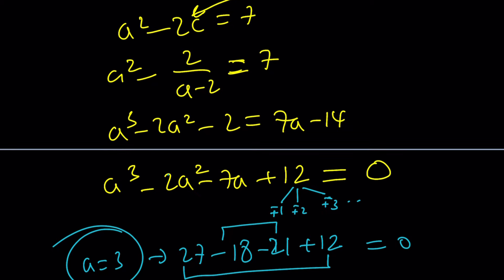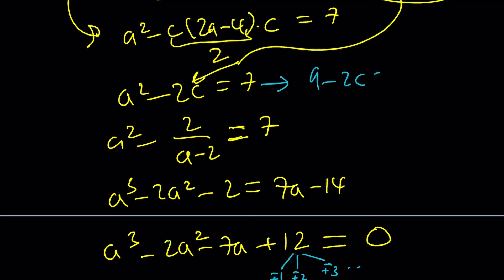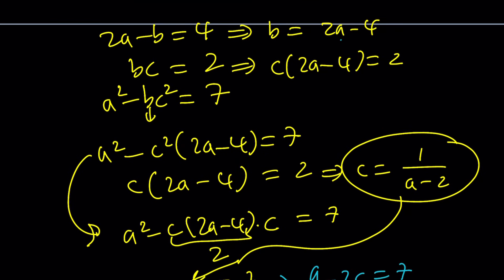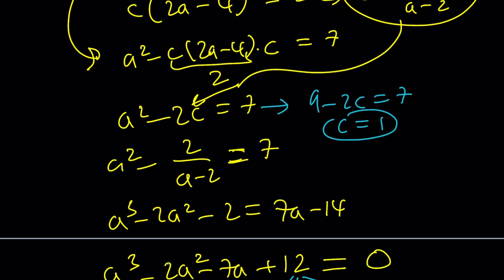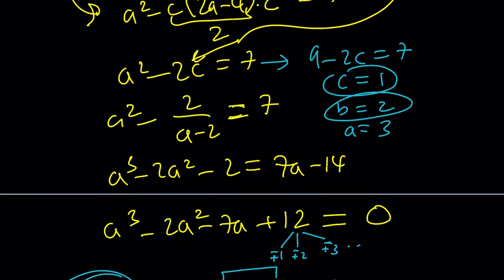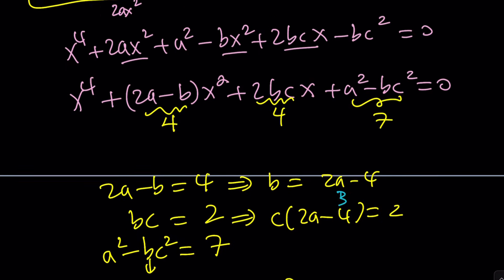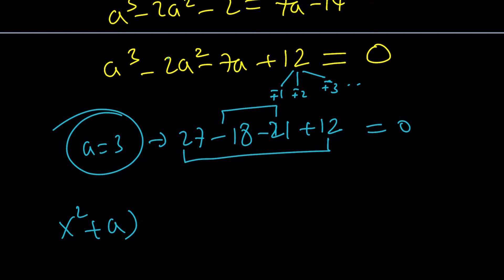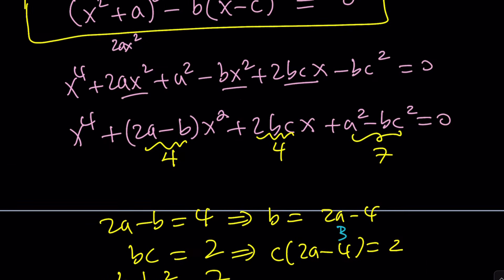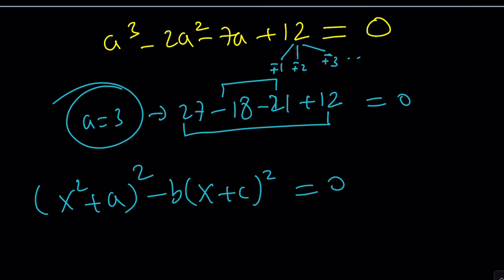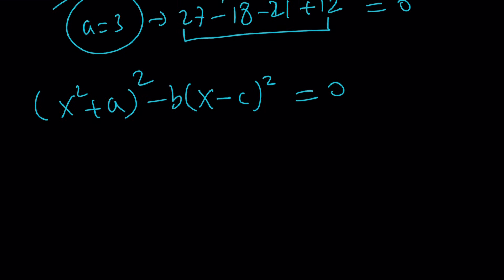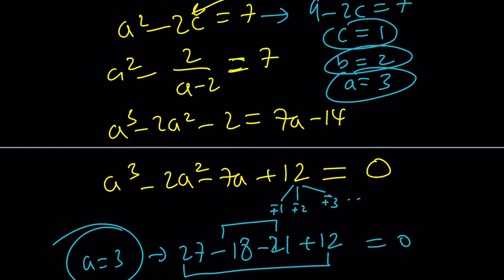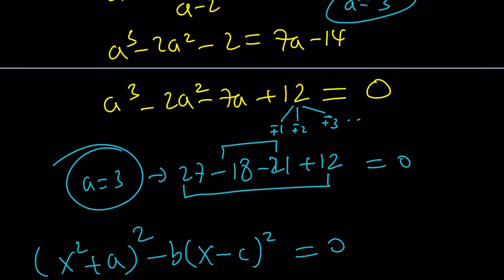A equals 3 gives us a lot of good information. From a squared minus 2c equals 7: 9 minus 2c equals 7, so c equals 1. And from 2a minus b equals 4: 6 minus b equals 4, so b equals 2. So a equals 3, b equals 2, c equals 1. Let's rewrite the expression: x squared plus 3 squared minus 2 times x minus 1 squared equals 0.